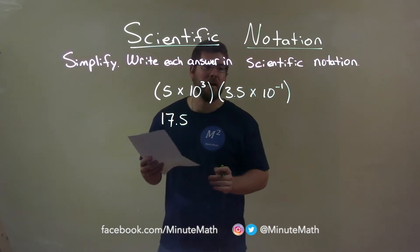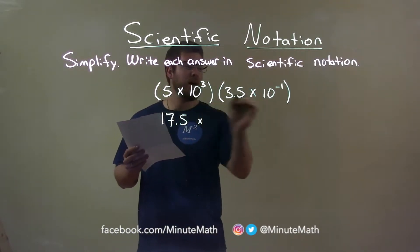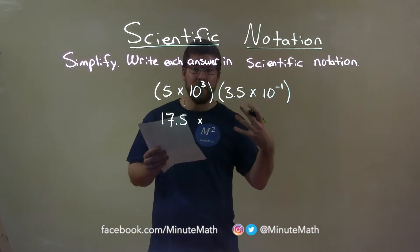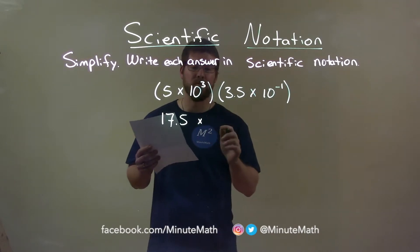Now, let's multiply the tens. 10 to the third times 10 to the negative 1. Same base, we add the exponents. 3 plus a negative 1 is a positive 2.